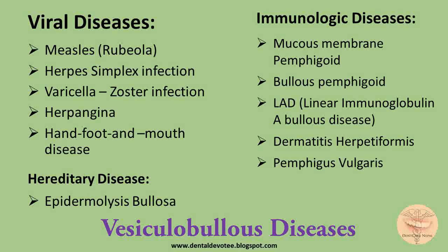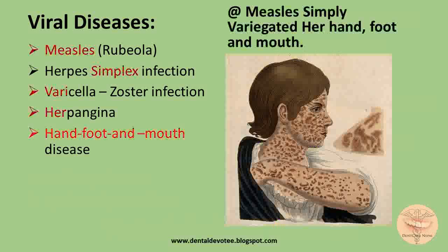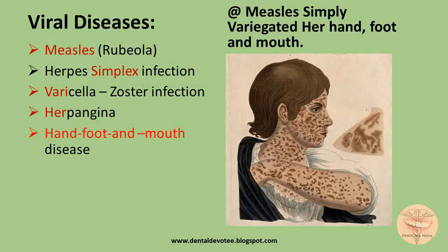Though this list seems to be very difficult to memorize, it is quite simple once we use mnemonics. Now moving to the mnemonics proper — for viral infections which cause vesiculobullous lesions, we can use the mnemonic: 'Measles Simply Variegated Her Hand, Foot and Mouth.'